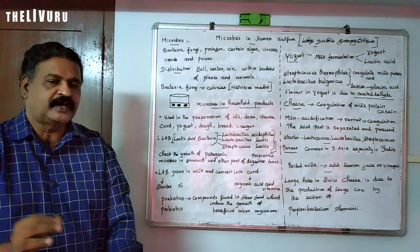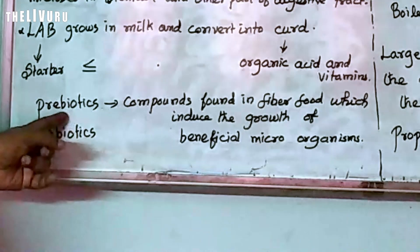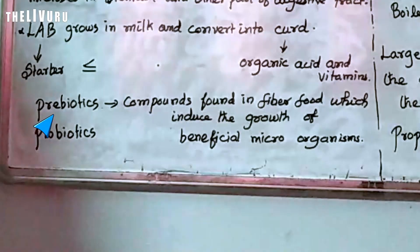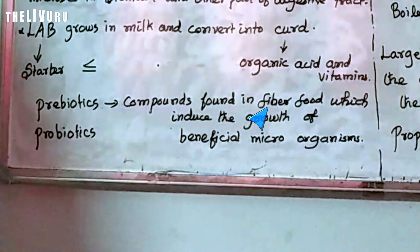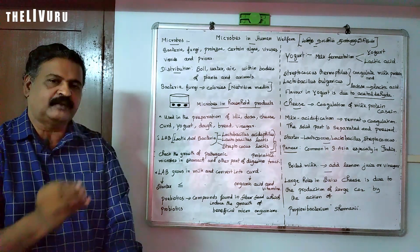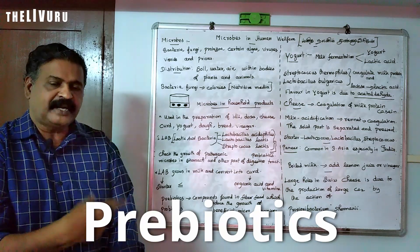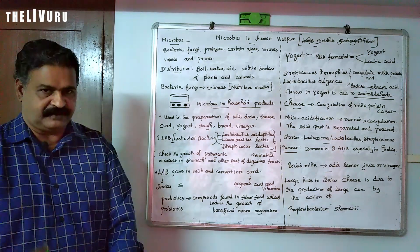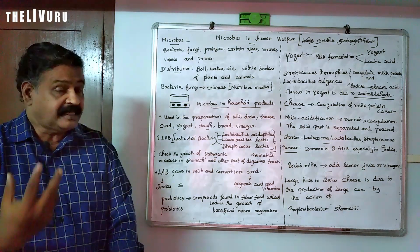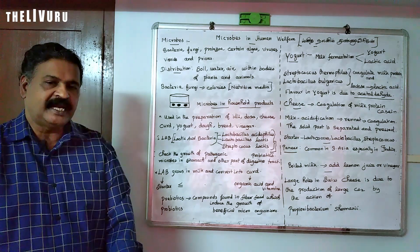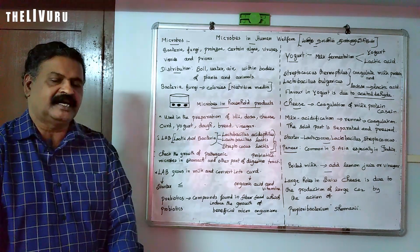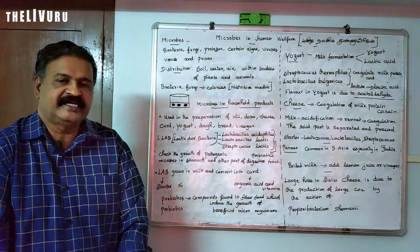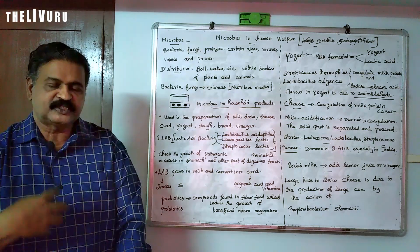Next — probiotics. We should know what probiotics are, and also what prebiotics are. Prebiotics are compounds found in fiber food. Prebiotics stimulate the growth of probiotics, that is, beneficial microorganisms in our body, especially in our stomach and intestines. Probiotics means there are beneficial microorganisms which are found in our body, especially in our stomach and intestines.